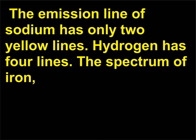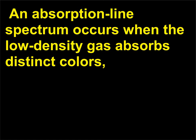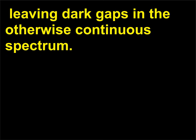The emission line of sodium has only two yellow lines. Hydrogen has four lines. The spectrum of iron, on the other hand, has an extremely large number of lines. An absorption line spectrum occurs when a low-density gas absorbs distinct colors, leaving dark gaps in the otherwise continuous spectrum.